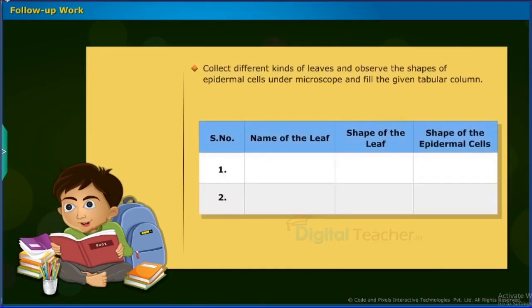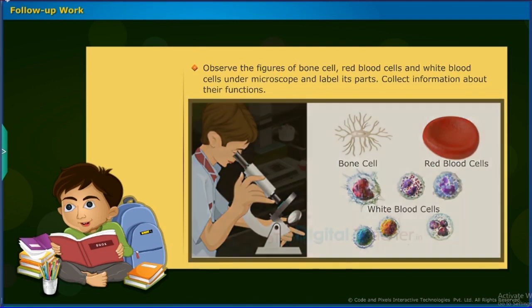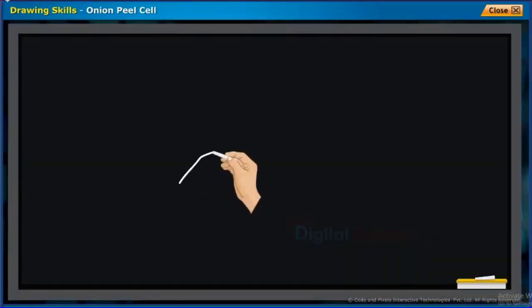Follow-up activities: Collect different kinds of leaves and observe the shapes of epidermal cells under a microscope, then fill in the tabular column. Observe figures of bone cells, red blood cells, and white blood cells under a microscope, label their parts, and collect information about their functions. Observe a small piece of a green leaf under a microscope and note the different types of cells and groups of cells observed.